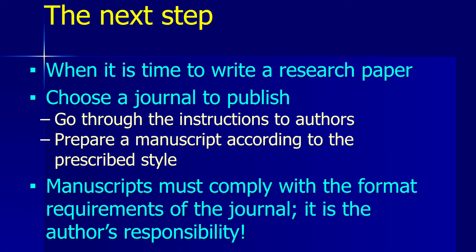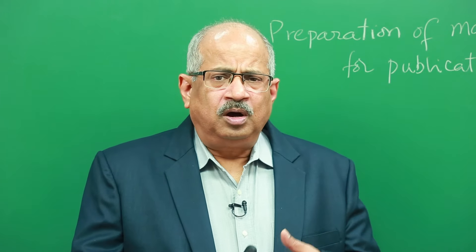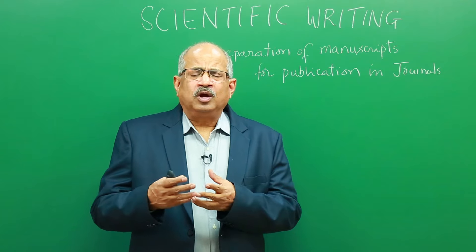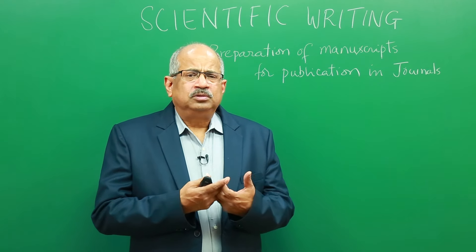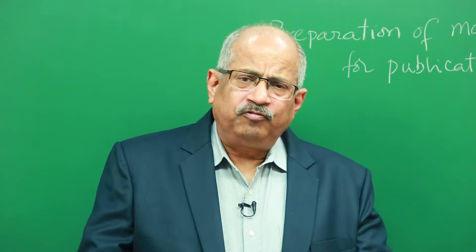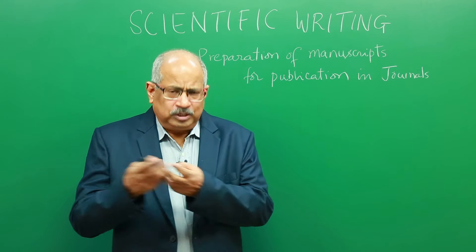The journal's field of interest is key — your research must fall within it. For example, if you have done research in pharmaceutics, the likely journals are Journal of Pharmaceuticals, Journal of Pharmaceutics, or Journal of Pharmaceutical Sciences. If you have done work in pharmacology, you would want to publish in Journal of Pharmacology. These journals are either national or international. Within India, we have Indian Journal of Pharmaceutical Sciences, Indian Journal of Pharmacology, Indian Journal of Physiology, and Indian Journal of Experimental Biology.